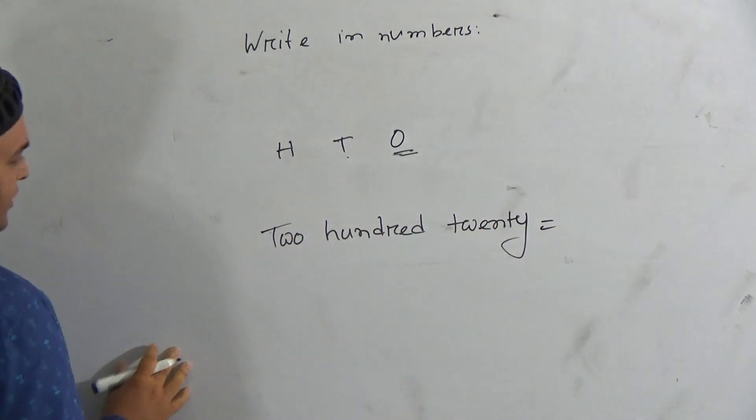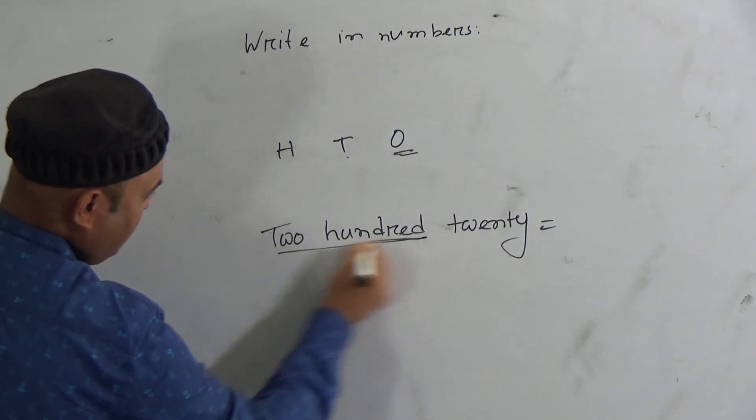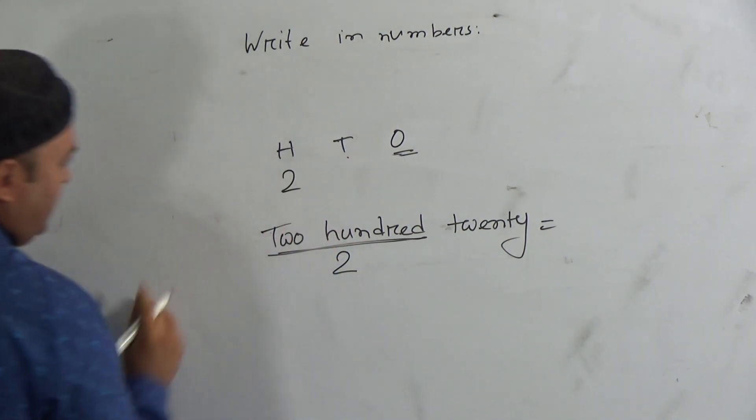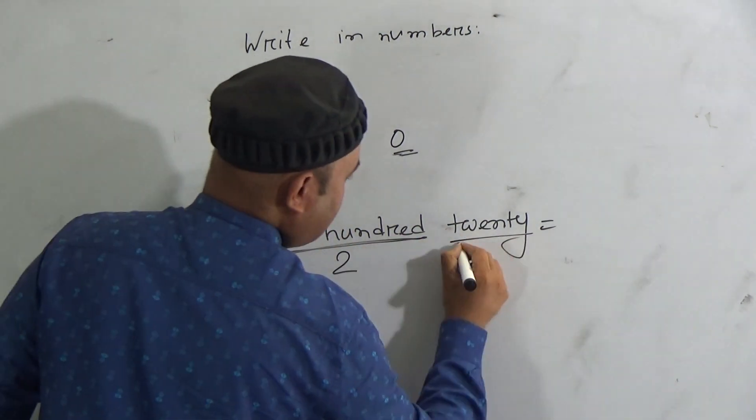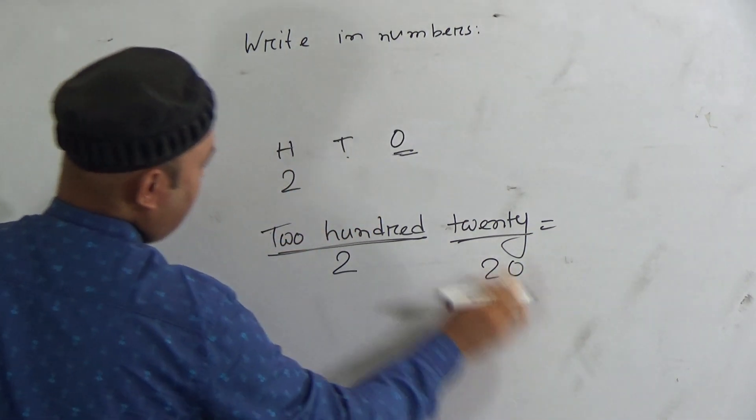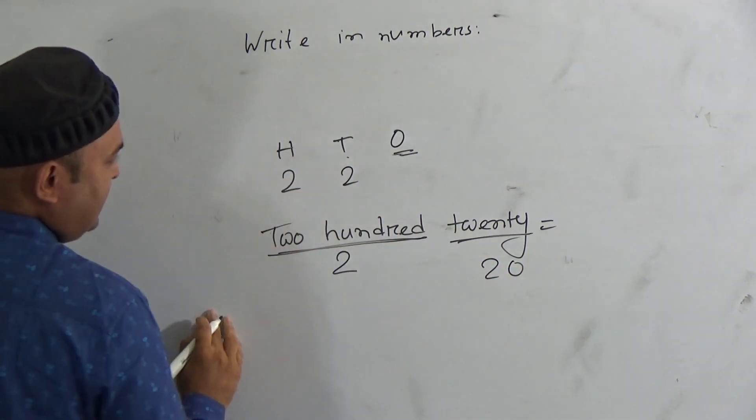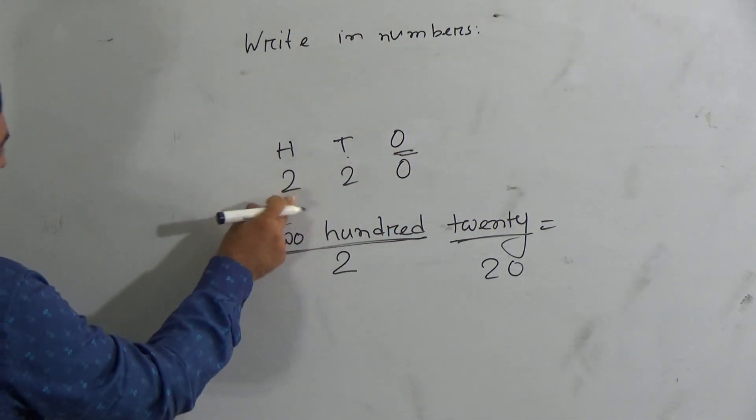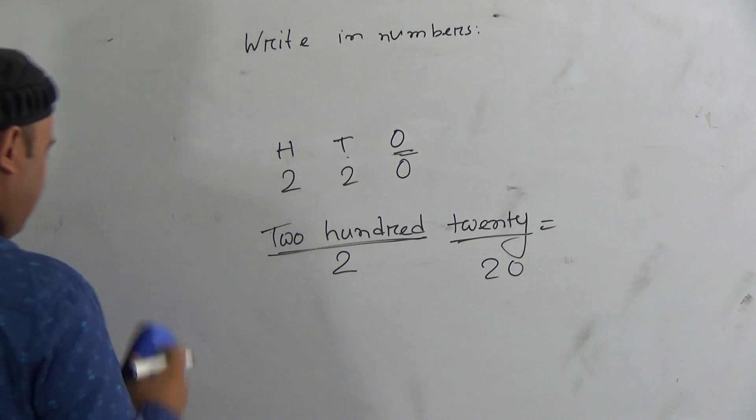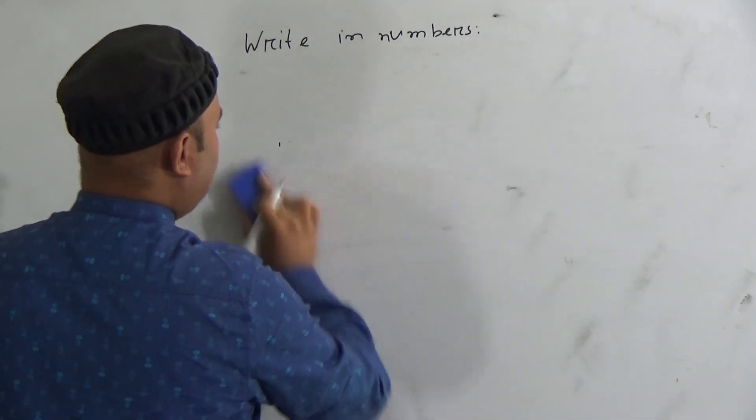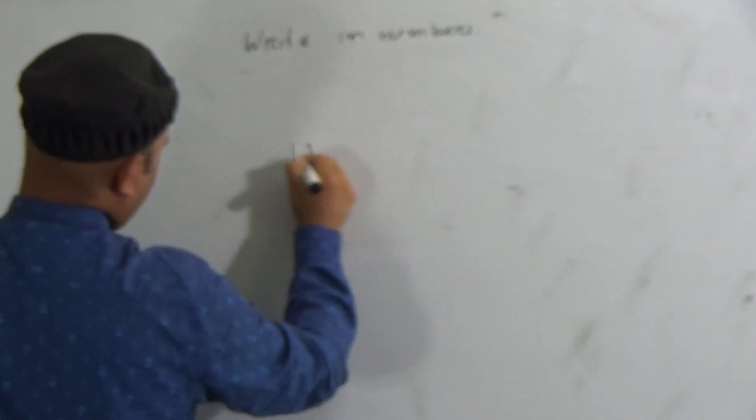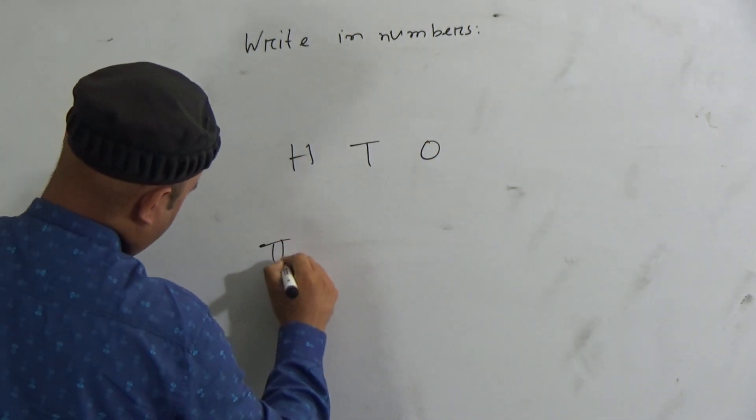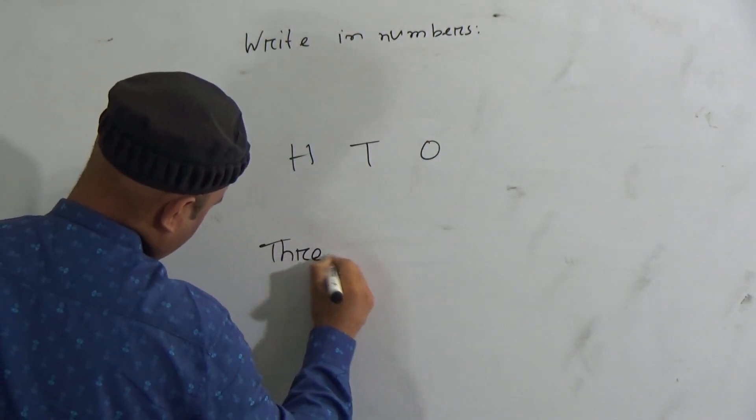If I write 220, how many hundreds are there? Here is 200, so you have to write 2 in hundred place. The last number is 20, that means 2 in tens place and 0 in ones place. So in short, it is 220.